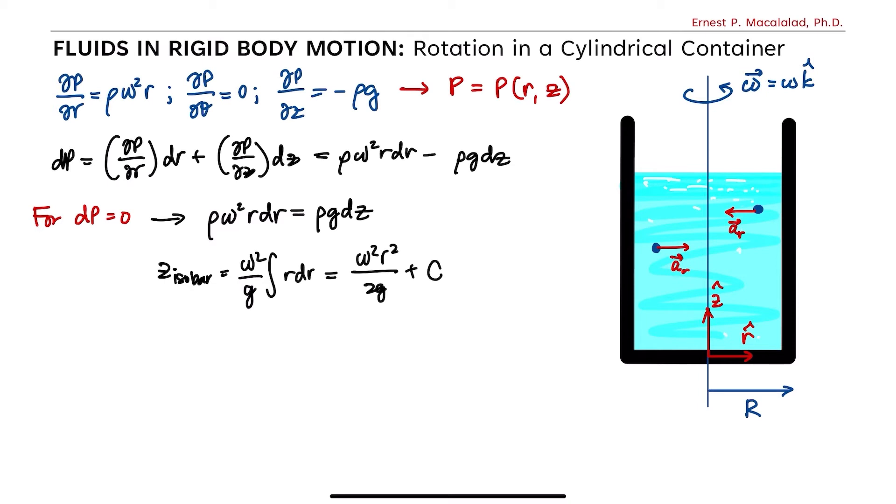So here we can see that z varies with square of r. So for a certain integration constant, this equation represents a parabola and the corresponding shape of the surface is a paraboloid. And the new free surface would look something like this.